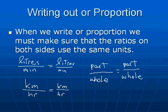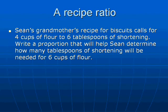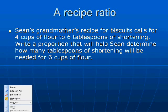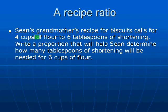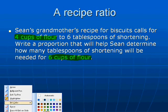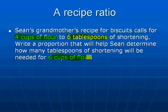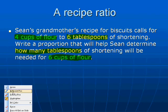Let's have a look at a little example — a recipe ratio. Sean's grandmother's recipe for biscuits calls for four cups of flour and six tablespoons of shortening. Write a proportion that will help Sean determine how many tablespoons of shortening will be needed for six cups of flour. Here we have four cups of flour, and cups of flour again down here, and we have tablespoons of shortening — and we're trying to find out how many tablespoons of shortening, so that's the thing we don't know. We're going to be working with cups over tablespoons.